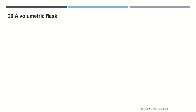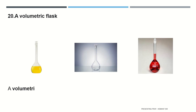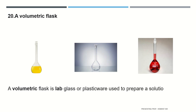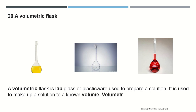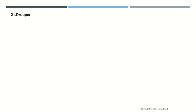A volumetric flask is a lab glass or plastic ware used to prepare a solution. It is used to make up a solution to a known volume. Volumetric flasks are used to measure volume much more precisely than beakers or other flasks like Erlenmeyer flasks.